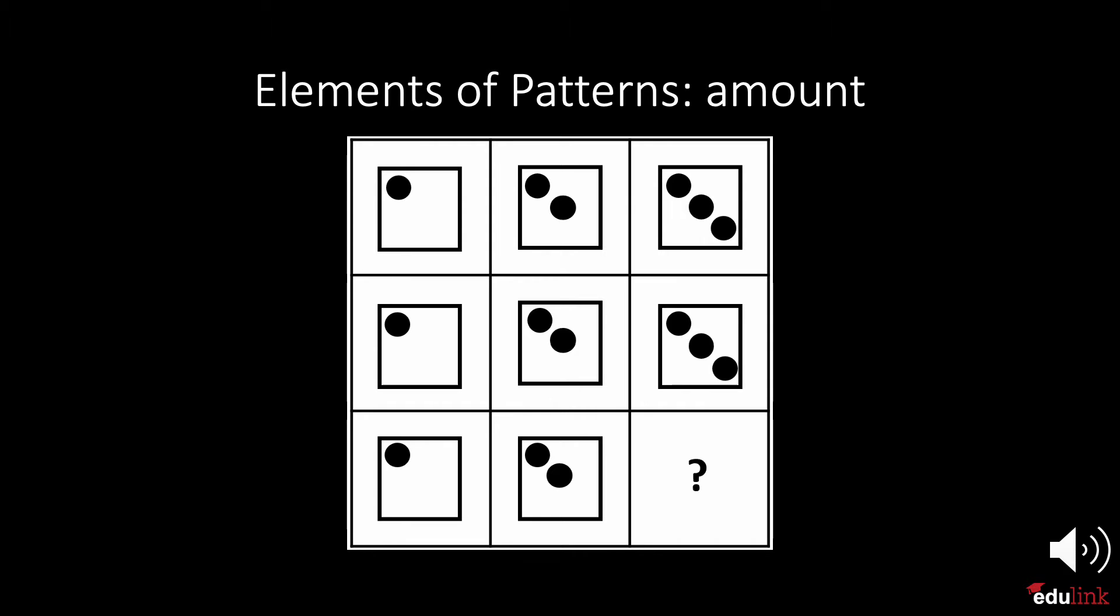However, across the rows, the number of dots increases by 1 from left to right, so it goes from 1 to 2 to 3. Can you guess what goes in the empty field? There must be 3 points in the empty field.